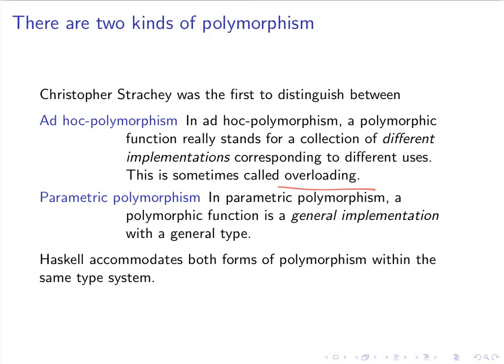Parametric polymorphism is a completely different beast. In parametric polymorphism, a polymorphic function is a general implementation with a general type. In Haskell, we have both kinds of polymorphism within the same type system, and dealing with this is quite interesting.